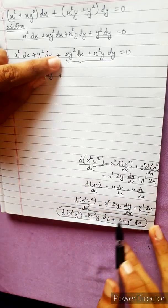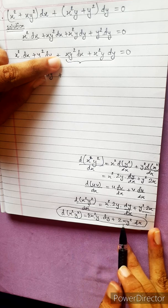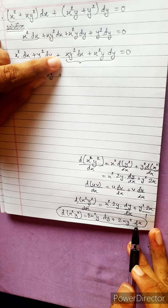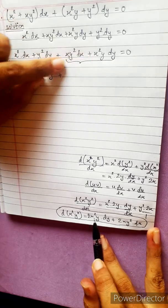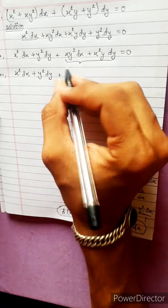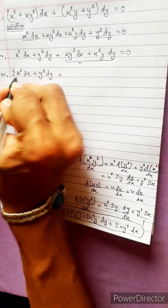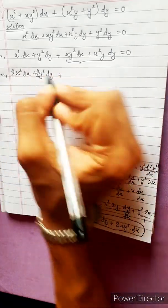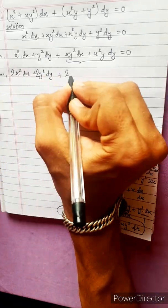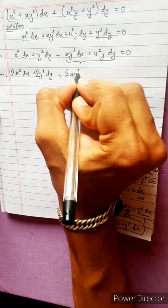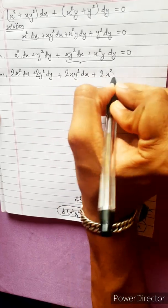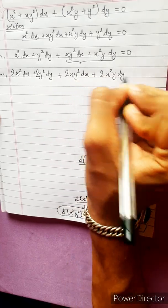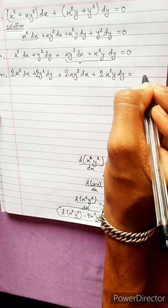Expanding: x squared dx plus y squared dy plus 2x squared dy plus 2x squared y into dy, combining the x squared y squared terms.